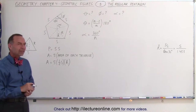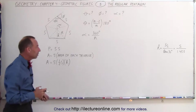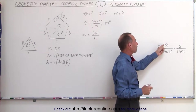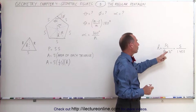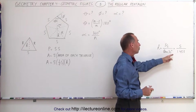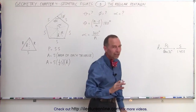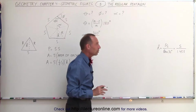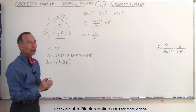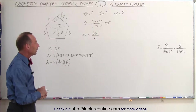Finding h takes a little trigonometry. It turns out that h equals half of s divided by the tangent of 36°, which approximates to s divided by 1.453 to three decimal places. For now, that's good enough — we'll use that number when needed.